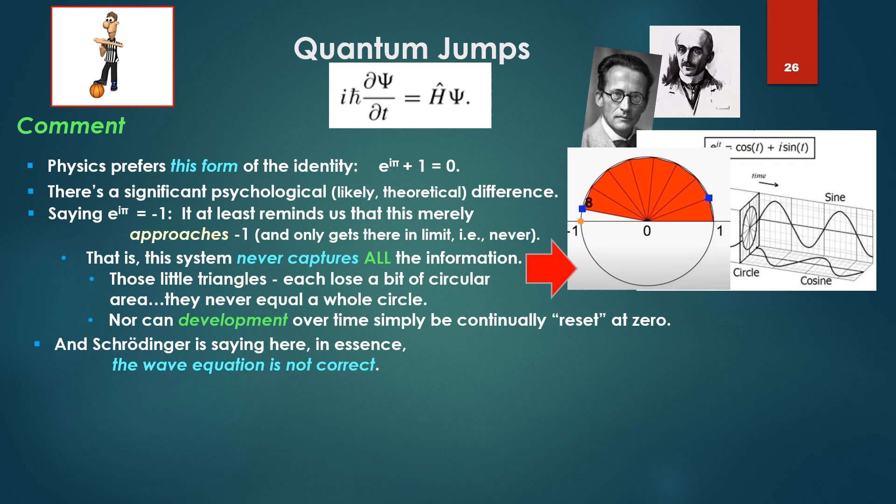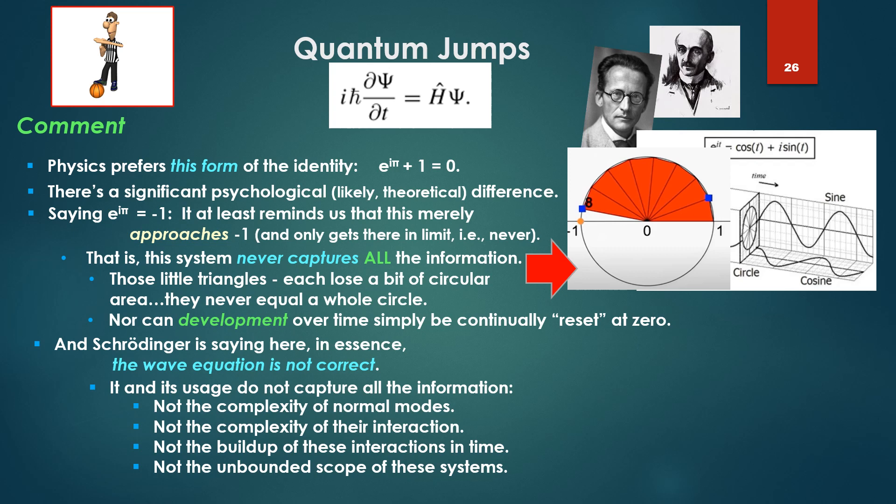And Schrödinger is saying here in essence, the wave equation is not correct. It and its usage did not capture all the information, not the complexity of normal modes, not the complexity of the interaction, not the buildup of these interactions in time, not the unbounded scope of these systems. And it will get worse.